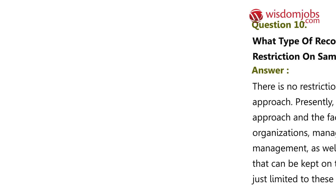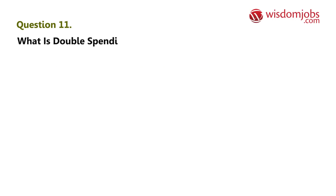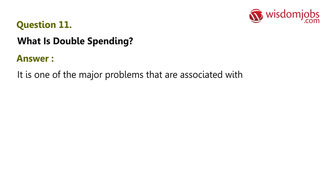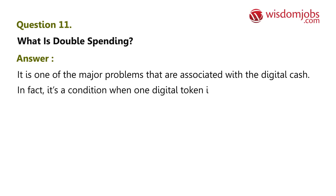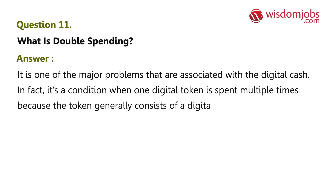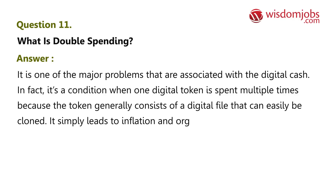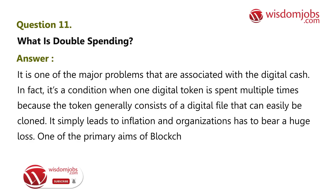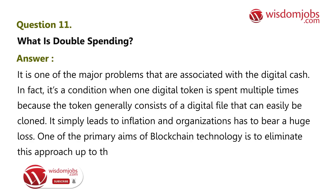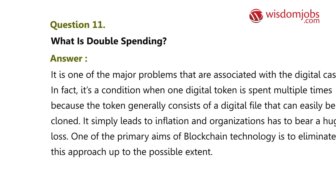Question 11: What is double spending? Answer: It is one of the major problems associated with digital cash. It's a condition when one digital token is spent multiple times, because the token generally consists of a digital file that can easily be cloned. It simply leads to inflation and organizations have to bear huge losses. One of the primary aims of blockchain technology is to eliminate this problem to the greatest possible extent.